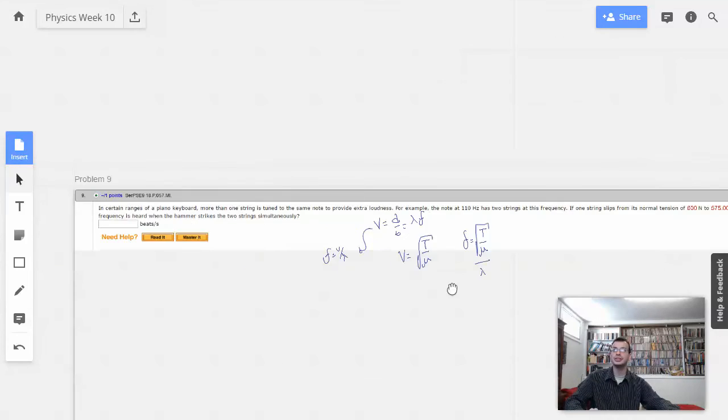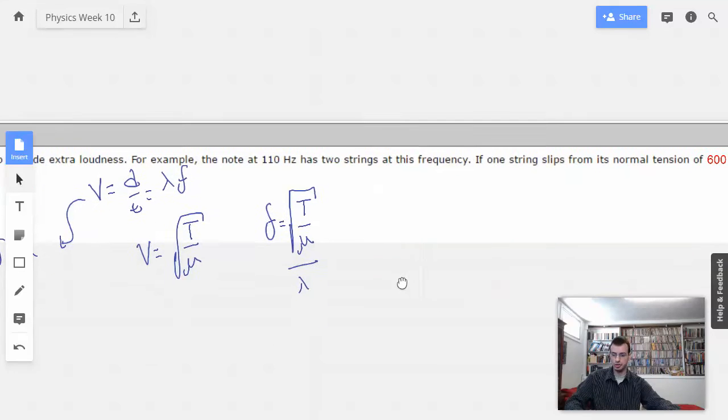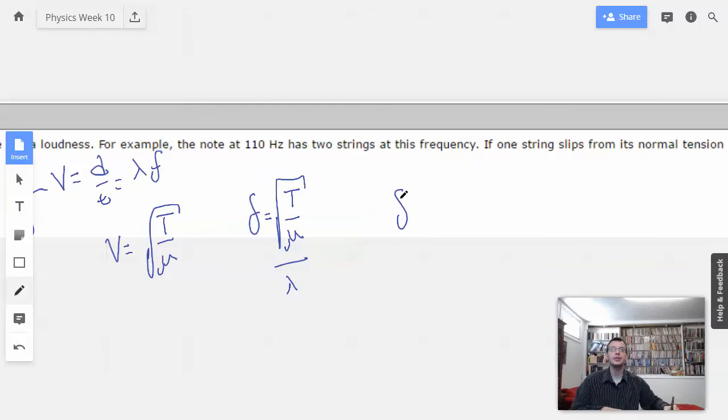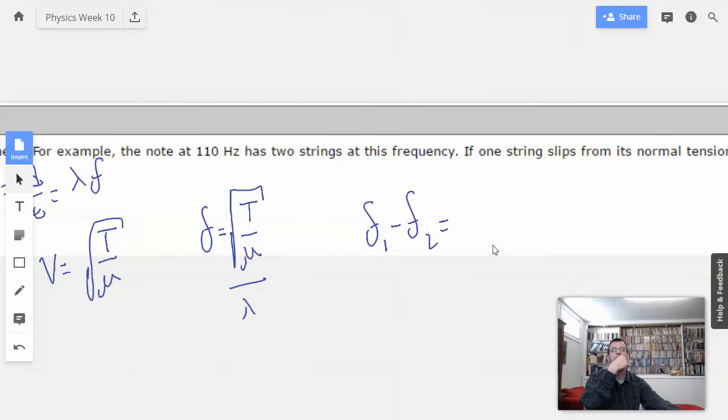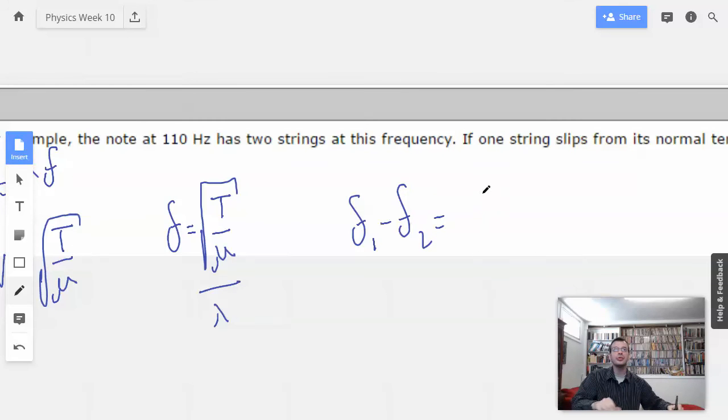So we're looking for the number of beats. Alright, so I'm just going to do frequency one minus frequency two, which equals square root of tension over mu. So we know frequency one is going to be 110 hertz because it hasn't slipped at all.